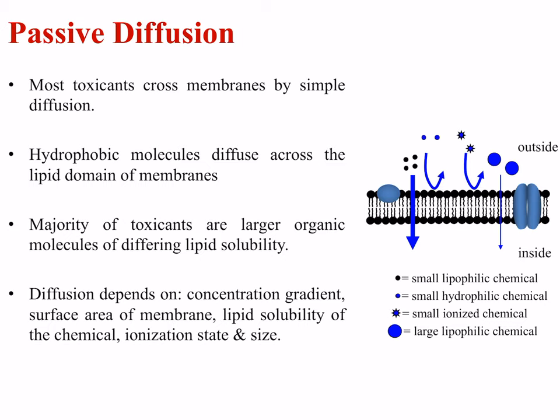Most toxicants will cross biological membranes by passive diffusion. Hydrophobic molecules diffuse across the lipid domain of membranes, and the majority of toxicants are larger organic molecules of differing lipid solubility. The diagram on the right shows four scenarios: a small lipophilic chemical crosses easily; a small hydrophilic chemical cannot cross; a small ionized chemical also cannot cross; and large lipophilic compounds cross less readily than small lipophilic molecules. The ideal for crossing is to be small in size and lipophilic in nature.